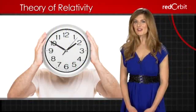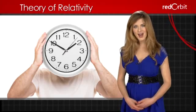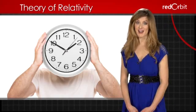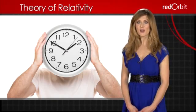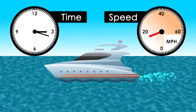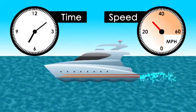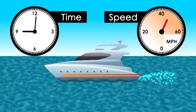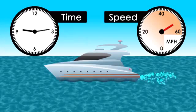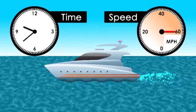The theory of special relativity changed the way scientists thought about time. Until Einstein's theory, it was thought that everyone experienced time the same way. Special relativity determined that the rate at which time passes to you depends on your speed. The faster you're moving, the slower that time passes.